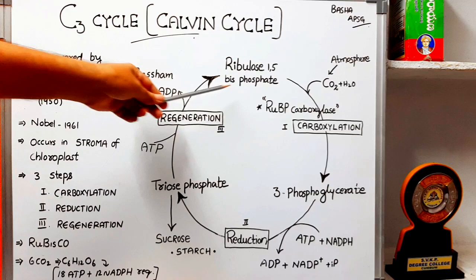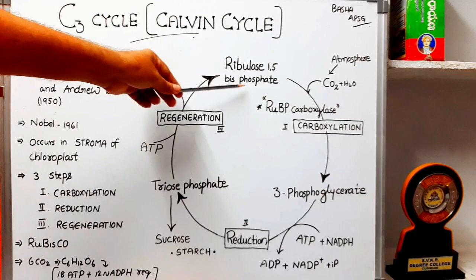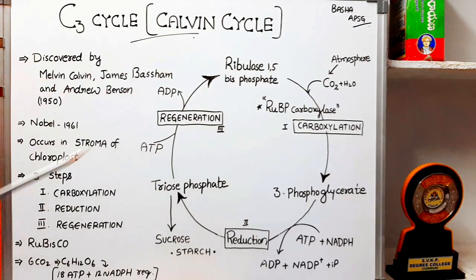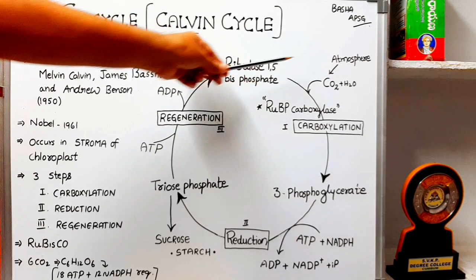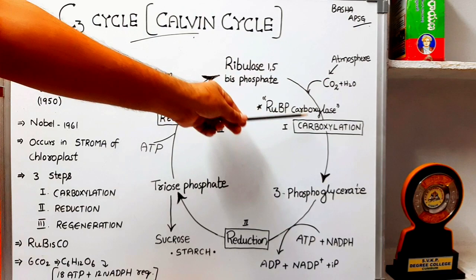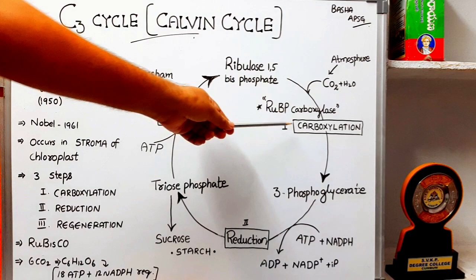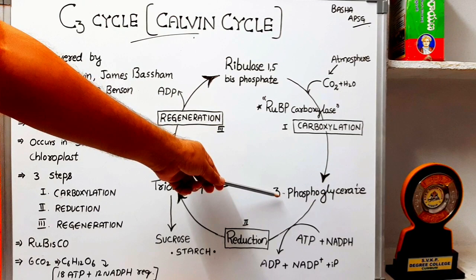In the first step, carboxylation — ribulose 1,5-bisphosphate is the molecule which is the primary acceptor of carbon dioxide. This is a 5-carbon compound. Ribulose 1,5-bisphosphate reacts with carbon dioxide in the presence of RuBP carboxylase. This reaction is called the carboxylation reaction, and the result is the formation of phosphoglycerate.